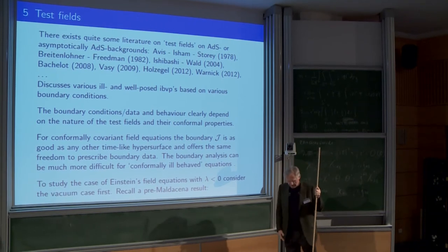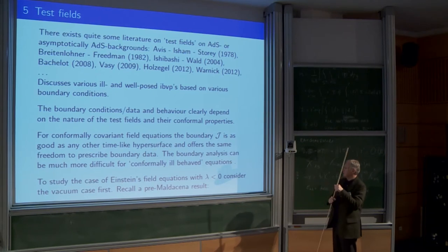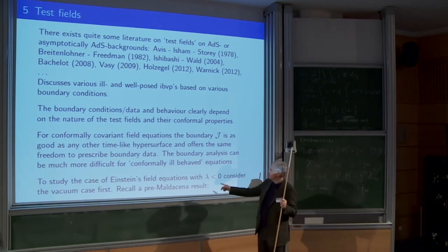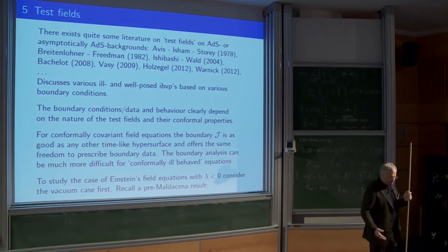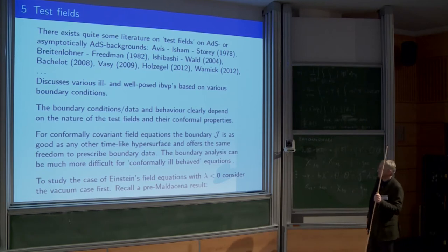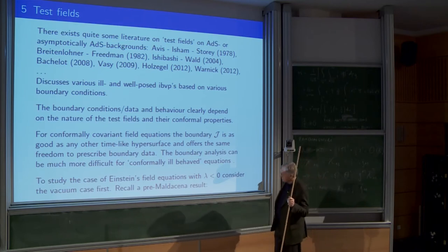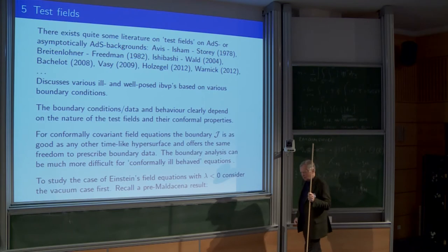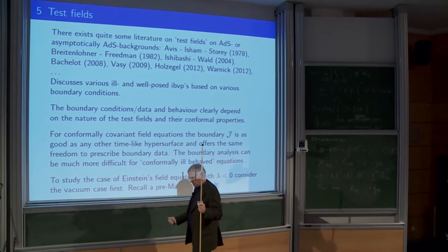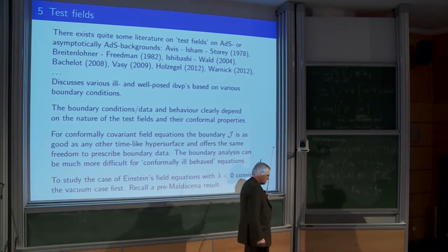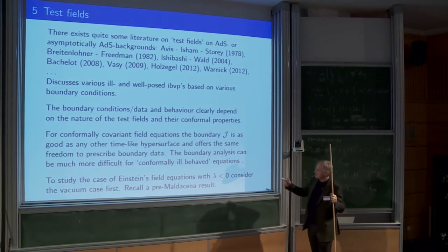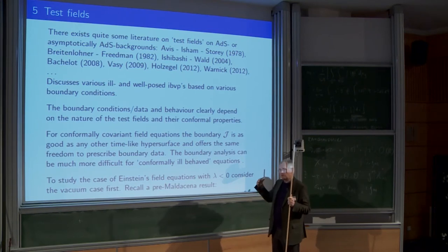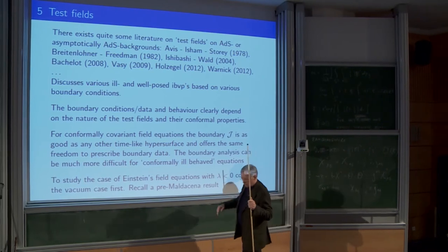If you want to say something about Einstein's field equations, you don't want to fiddle around with these complicated situations. Therefore I look at the vacuum case first, and I shall recall a pre-Maldacena result. I mention this because if I had decided to do this after Maldacena and had been influenced by all the ADS-CFT material, I might have asked different questions. But because this was before, I just asked the standard questions: how many of these solutions exist, how can you characterize them in terms of data, and what about the initial boundary value problem.